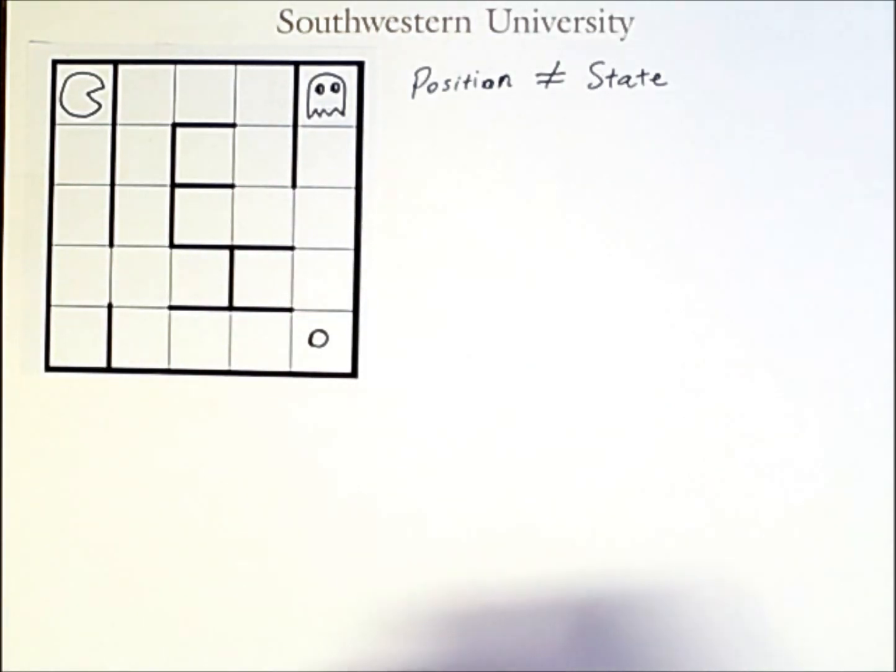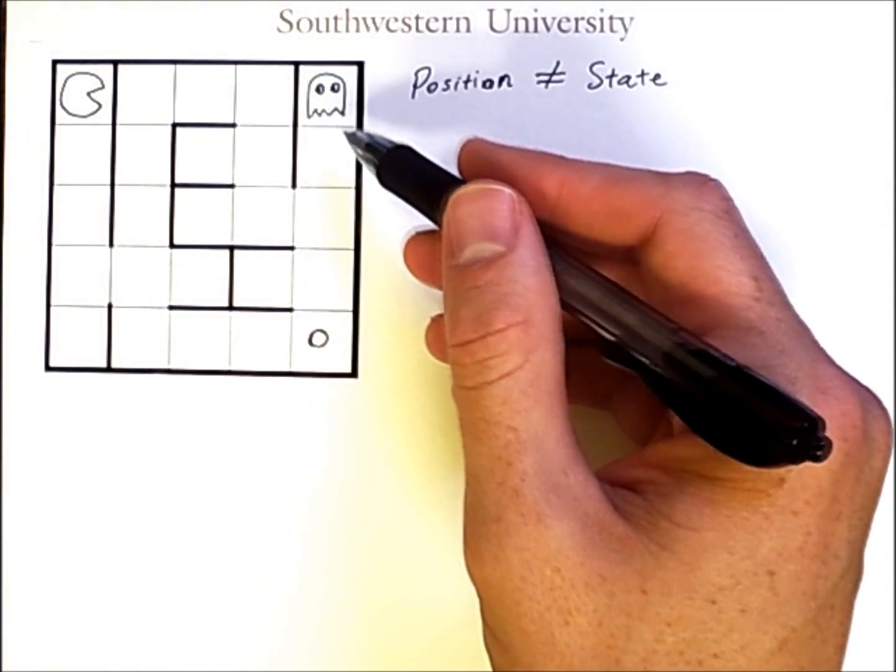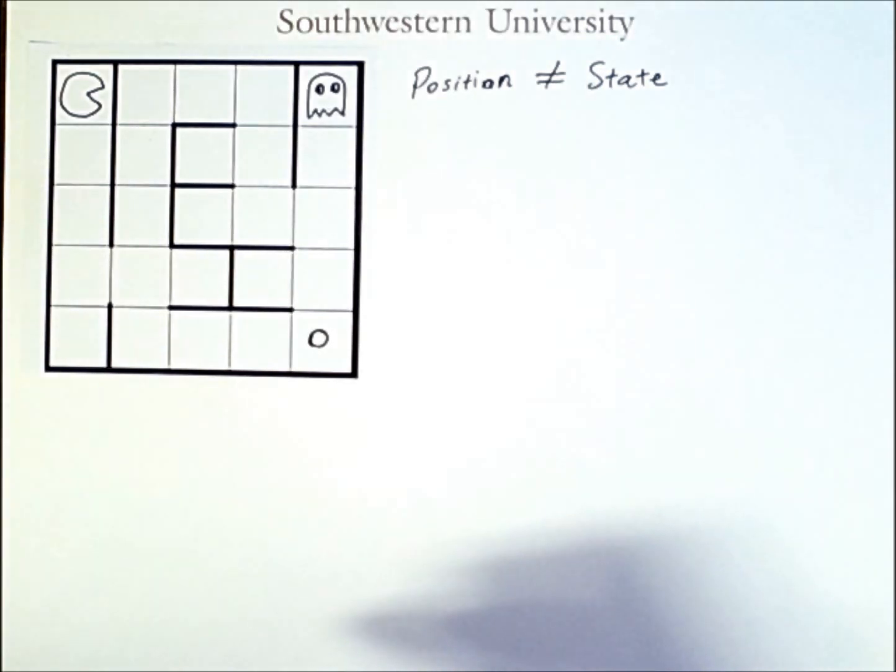In particular, let's say that the ghost will always pursue Pac-Man along the shortest path to intercept Pac-Man. Don't worry about how the ghost knows what the shortest path is. Simply assume that that's what the ghost will do. Our Pac-Man agent is able to model this in this scenario.